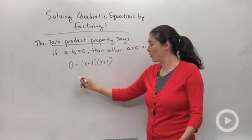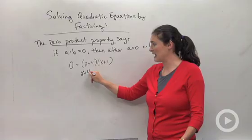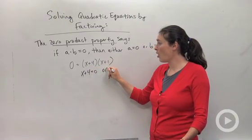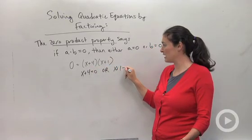and the answer is zero. What that tells me is that x plus 4 equals zero, or x plus 1 equals zero.